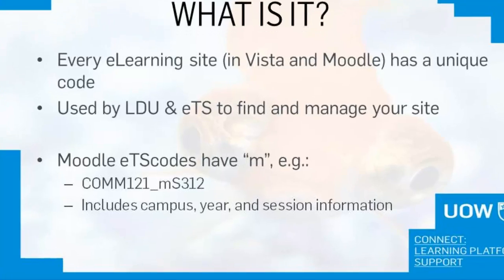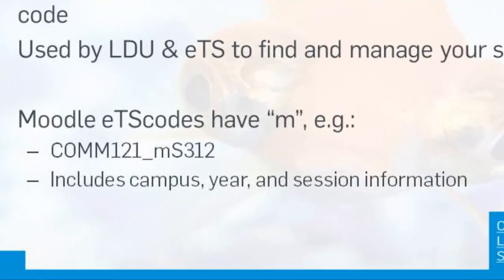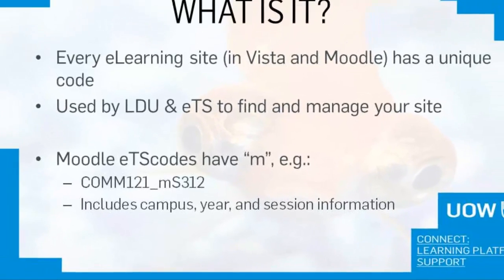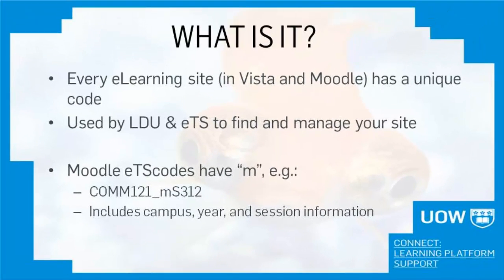Most ETS codes look something like this. It contains information about the subject code, year, and session that the subject occurred. However, sites which include multiple subjects or sites that are not used for subjects will not have a subject code, so it's important to know where to find your ETS code.